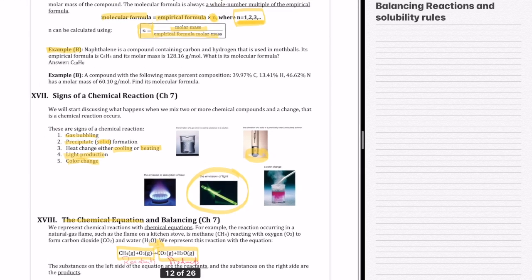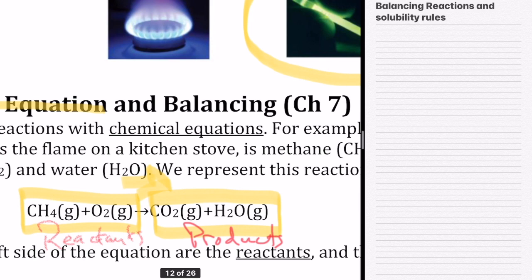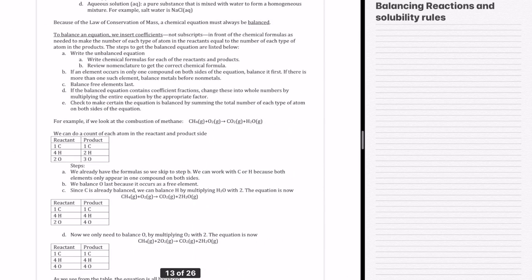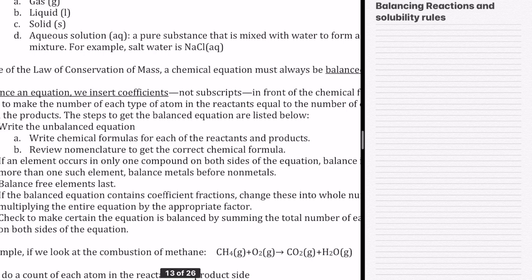Next, we put a state next to the reactants and products. In this case, all of these have a G, indicating all species are gases. If it's a gas, we put G. If it's liquid, we put L. If it's solid, we put S. If it's aqueous solution, we put AQ. AQ represents a mixture between some pure substance and water.